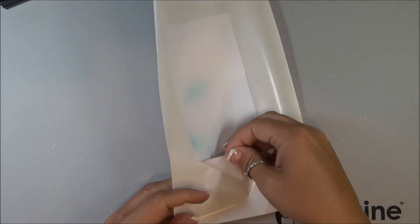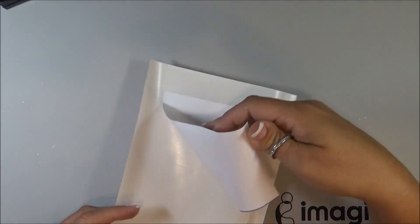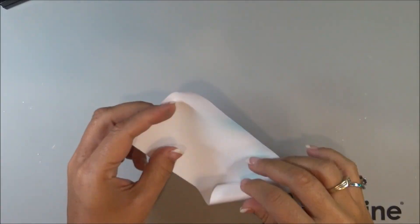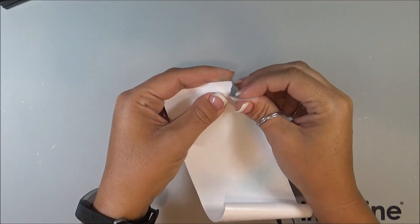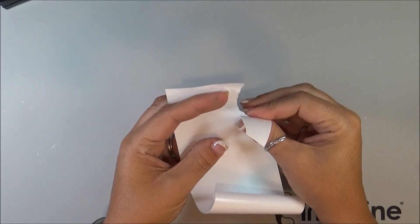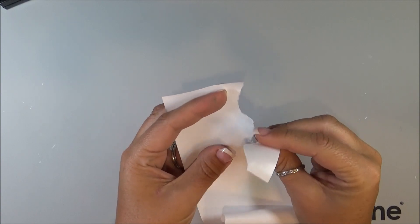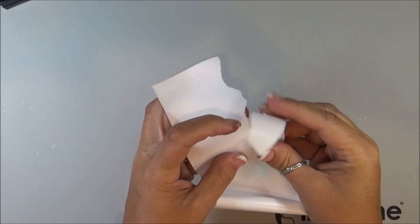So I'm just going to peel that off, like so, and then down one side, I'm just going to roughly create a pattern by tearing it.